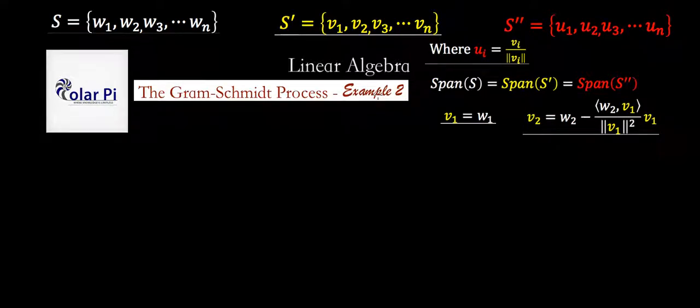Here's example two. As per promise, we're going to work with vectors that have complex entries, which means that our inner product will be slightly differently defined, as opposed to the normal dot product where we just multiply corresponding entries and add. We have to do something slightly different this time because of the complex entries to our vectors. But first, let's get started with our set S, which this time has two vectors, W1 and W2.